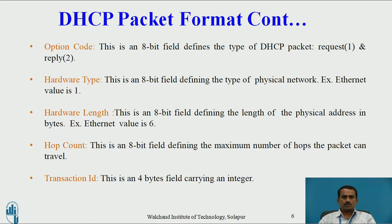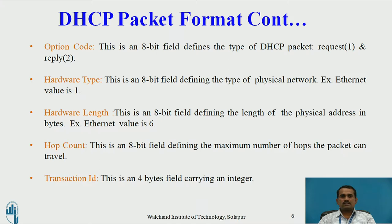First one is operation code. This is an 8-bit field that defines the type of DHCP packet. While transmitting the packet from client to the server, if the packet contains 1, it is a request. If the packet contains 2, it is a reply. Second one is hardware type. This is an 8-bit field defining the type of physical network used while transmitting the packets. For example, Ethernet value is 1.